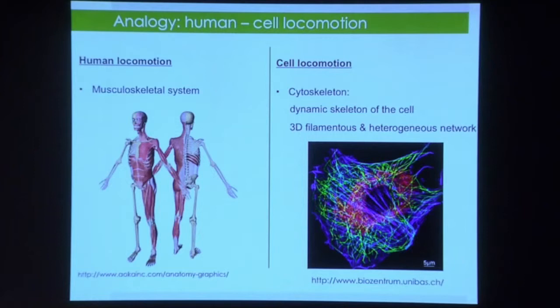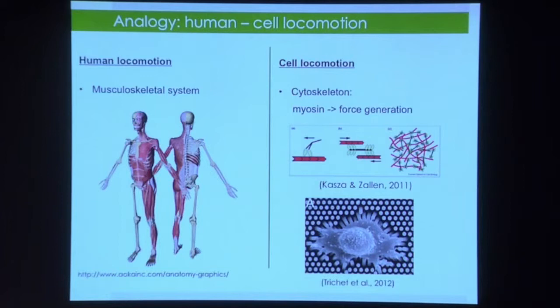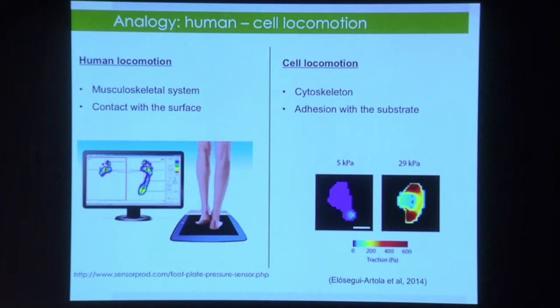The cytoskeleton is a filamentous and heterogeneous three-dimensional network with three main components: actin (blue), microtubules (green filaments), and intermediate filaments (red). These elements support the forces that cells exert during movement. In addition, the cell can exert forces through molecular motors — the most known being myosin. The myosin walks along the actin filament, acting as the muscles of the cell, contracting for example the matrix.